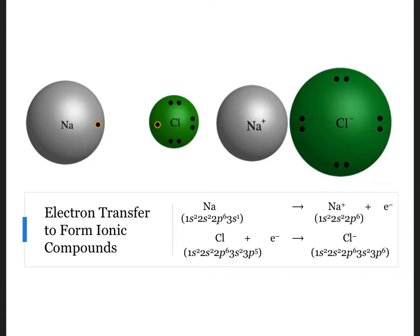In this example, a neutral sodium atom with the electron configuration 1s2, 2s2, 2p6, 3s1 will give up one valence electron to form Na+, with the same electron configuration as neon.